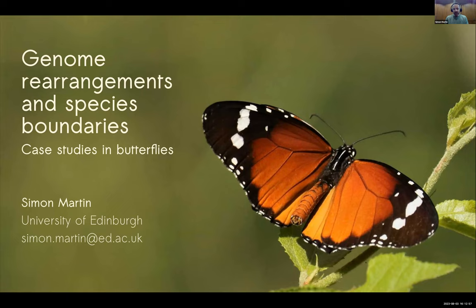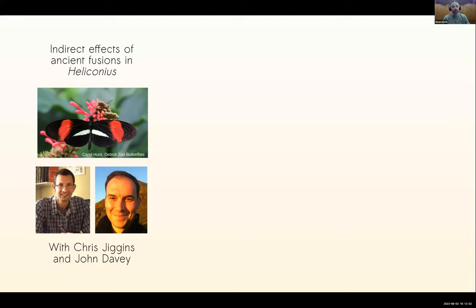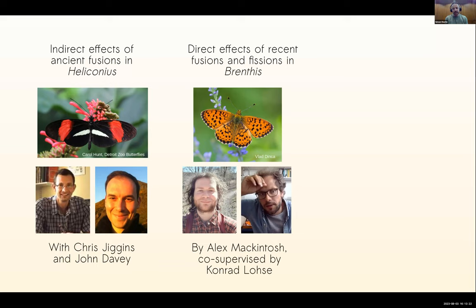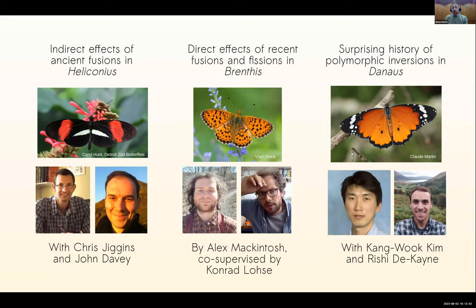I'm going to divide the talk into three parts. The first goes back to work I did from my PhD and as a junior research fellow working with Chris Jiggins and postdoc John Davey on Heliconius butterflies - on the indirect effect of ancient chromosome fusions. The second part is work by Alex McIntosh, a PhD student finishing here in Edinburgh co-supervised by Conrad Loza, on more direct effects of chromosome fusions and fissions on species boundaries in Brenthis fritillary butterflies. Finally, I'll show new results from our lab on the African Danaeus butterflies - work by postdocs Kangwuk Kim and Rishi Dekain on inversions that are polymorphic in the population and have quite surprising histories.